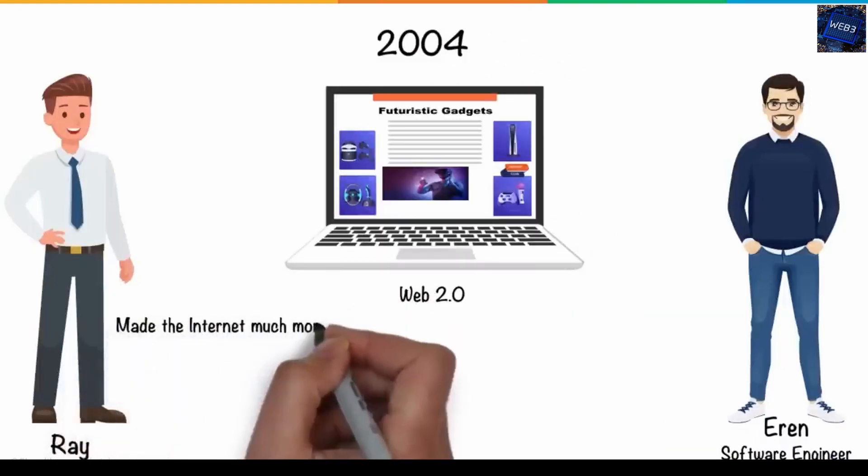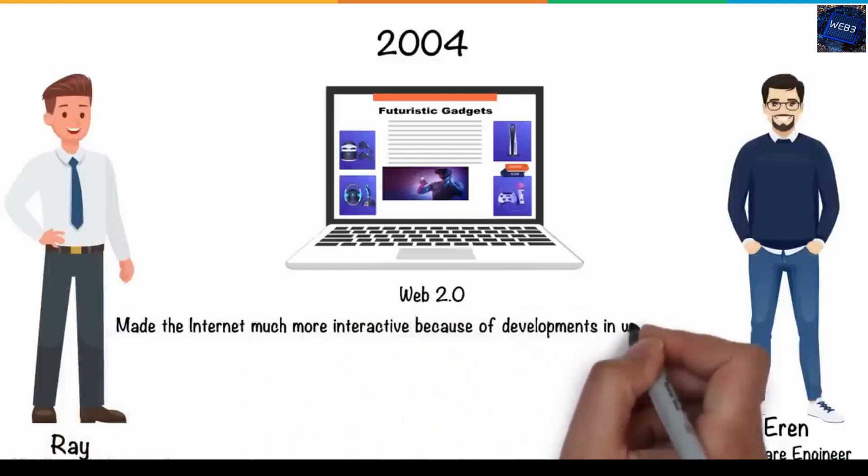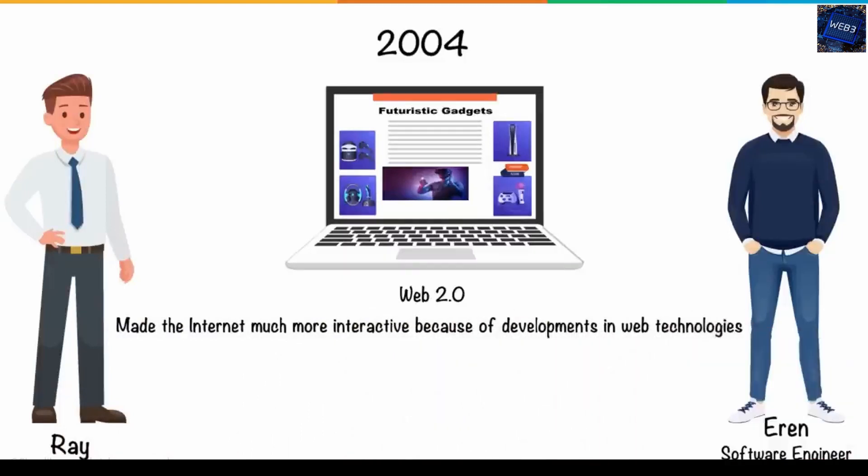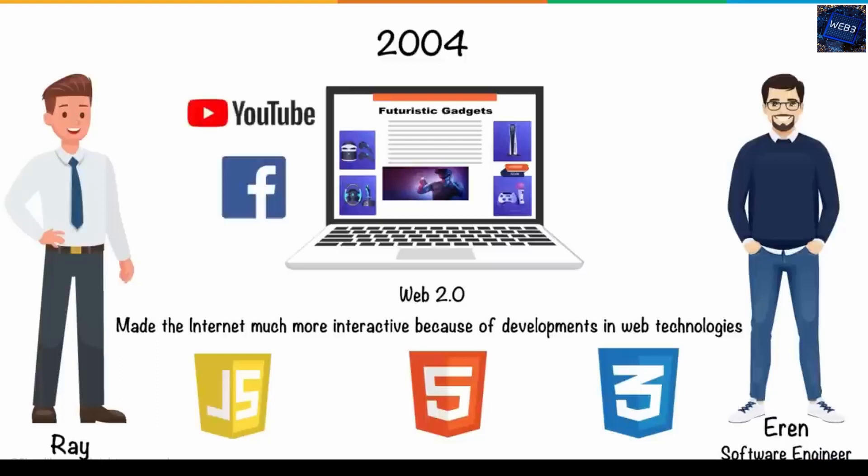Web 2.0 made the internet much more interactive because of developments in web technologies such as JavaScript, HTML5, CSS3, and others, which allowed companies to create interactive web platforms like YouTube, Facebook, Wikipedia, and many more.